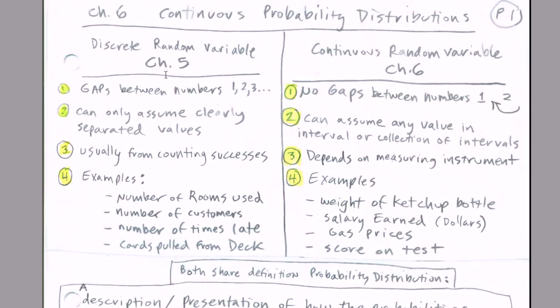We want to remind ourselves where we came from. Chapter 5, we did discrete random variable and discrete probability distributions. Now we're going to move on to continuous. Discrete random variables have gaps between numbers 1, 2, 3, we were mostly counting. Discrete random variables can only assume clearly separated values, usually from counting successes. We did things like count the number of banquet rooms used, number of customers arriving at Dick's hamburgers, number of times a plane was late, cards pulled from a deck.